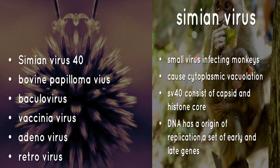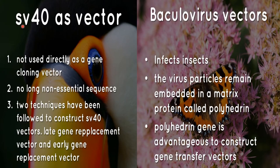Simian Virus 40, also called SV40, is a small virus infecting monkeys that causes cytoplasmic vacuolation. SV40 consists of a capsid and a histone core. The DNA has an origin of replication and sites for early and late genes.